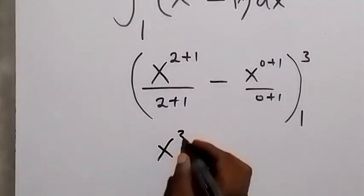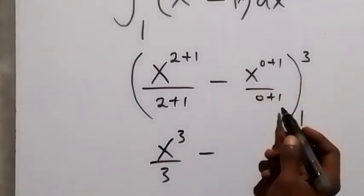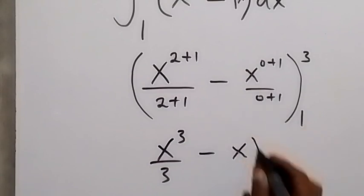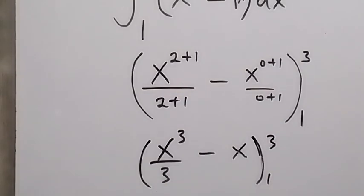We have x raised to power 3 over 3, then minus x raised to power 1 over 1, so that's x cubed over 3 minus x, then we have the limit from 1 to 3.